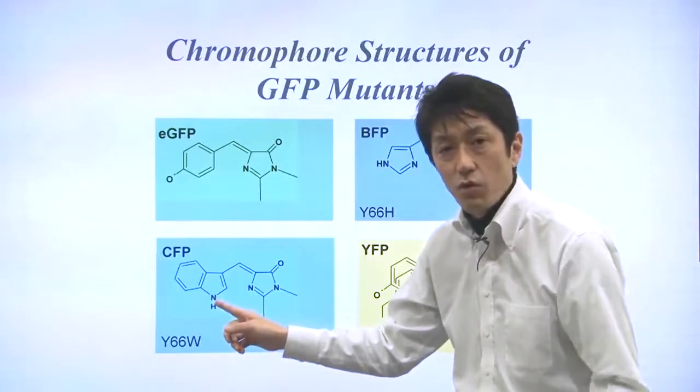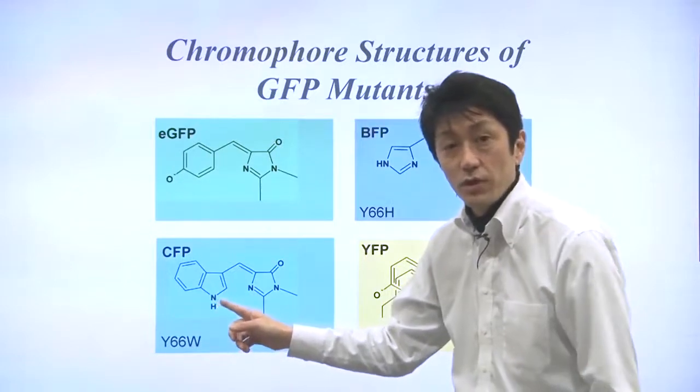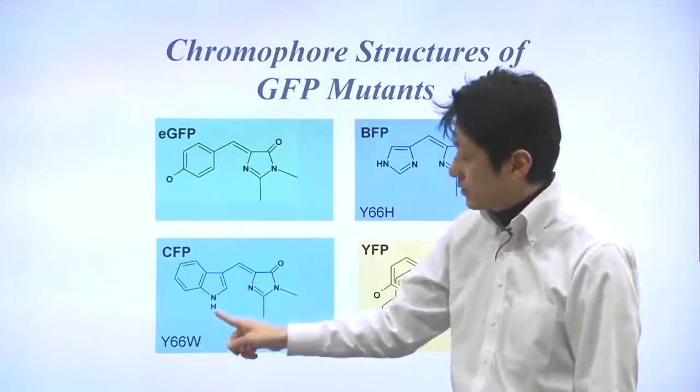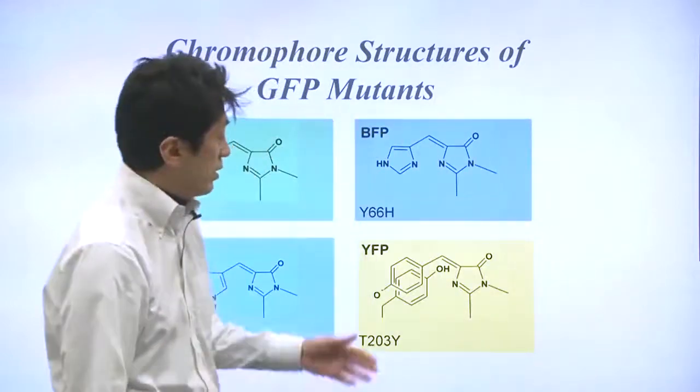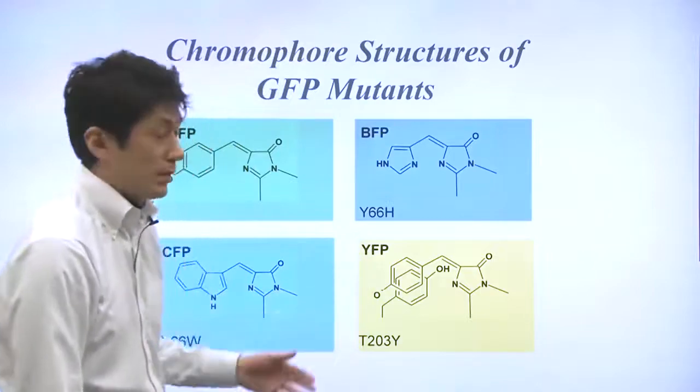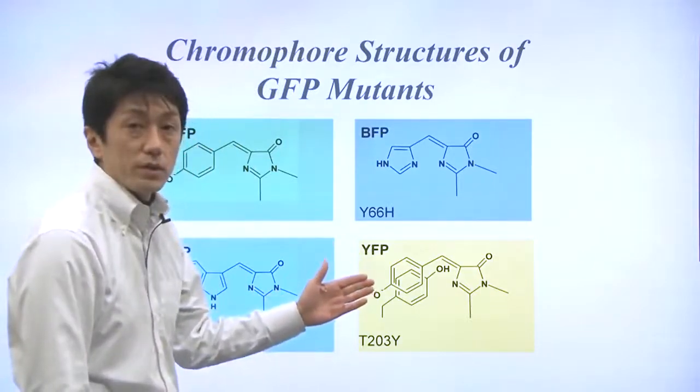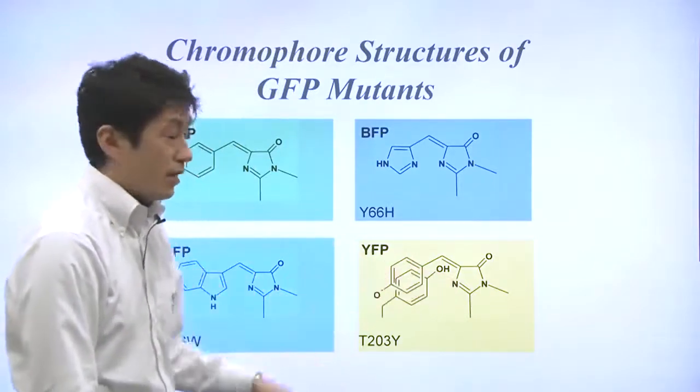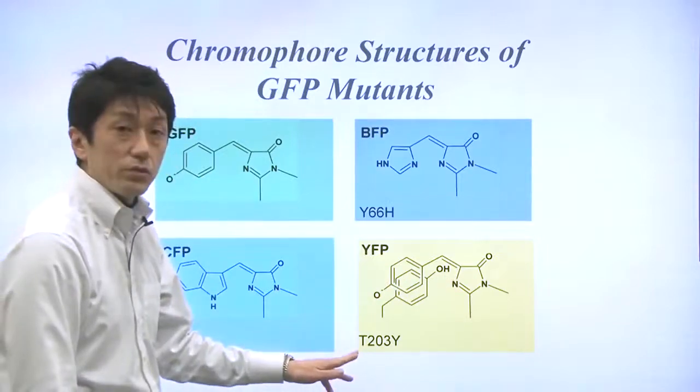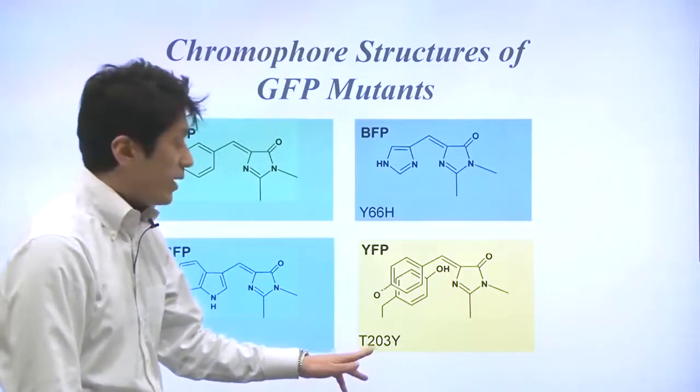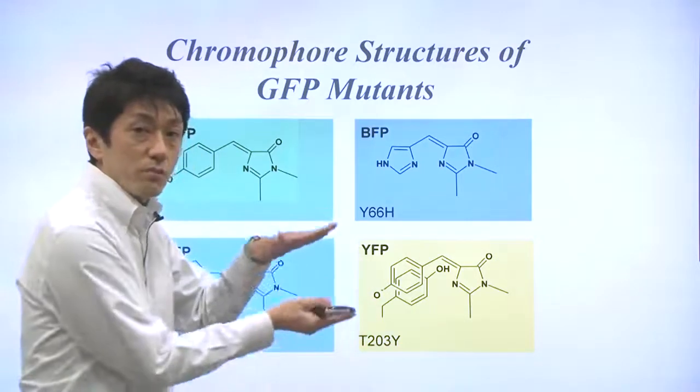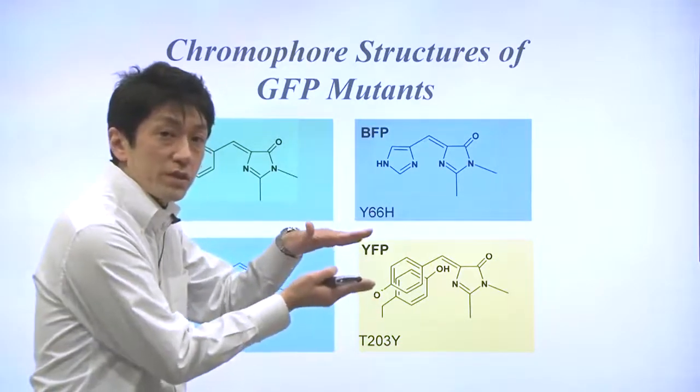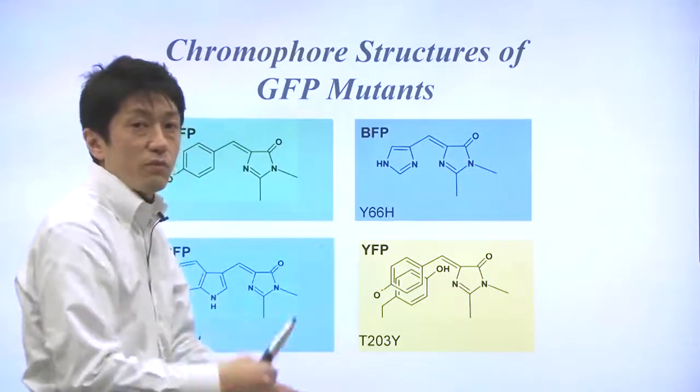What is the one-letter code of W? Yes, it's tryptophan. In yellow fluorescent protein, YFP, the chromophore stays the same, but threonine-203 is replaced by the tyrosine. The stacking interaction between these two tyrosines changes the emission wavelengths.